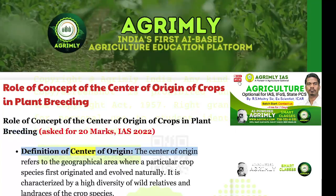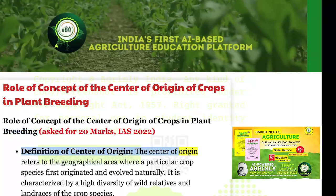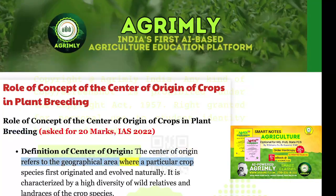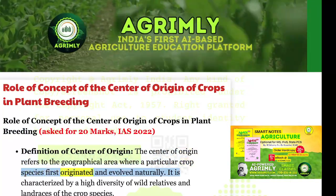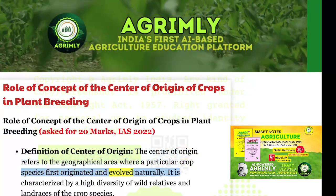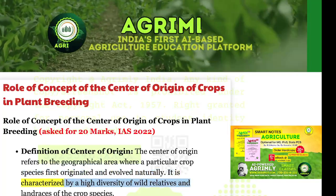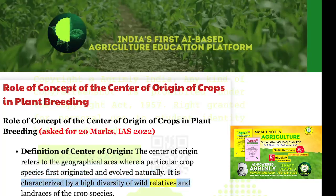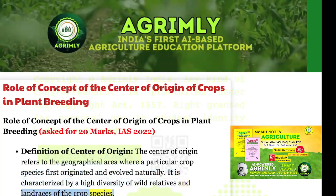Definition of Center of Origin: The center of origin refers to the geographical area where a particular crop species first originated and evolved naturally. It is characterized by a high diversity of wild relatives and landraces of the crop species.